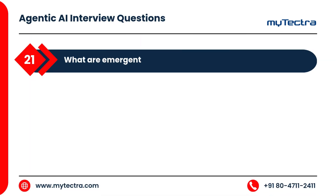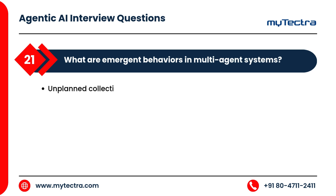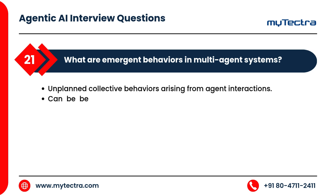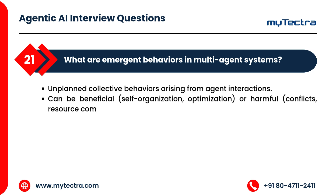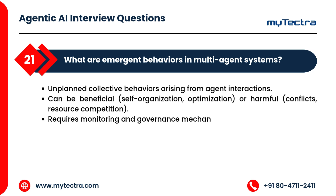What are emergent behaviors in multi-agent systems? These are unplanned collective behaviors arising from agent interactions. They can be beneficial — such as self-organization and optimization — or harmful, including conflicts and resource competition. Emergent behaviors require monitoring and governance mechanisms.